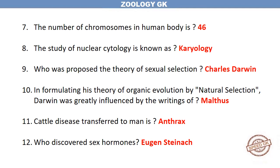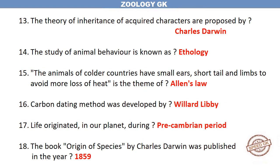The cattle disease transferred to man is Anthrax. Who discovered sex hormones? Eugen Steinach. The theory of inheritance of acquired characters was proposed by Charles Darwin.